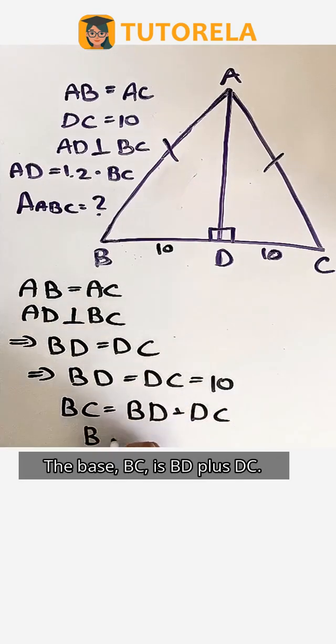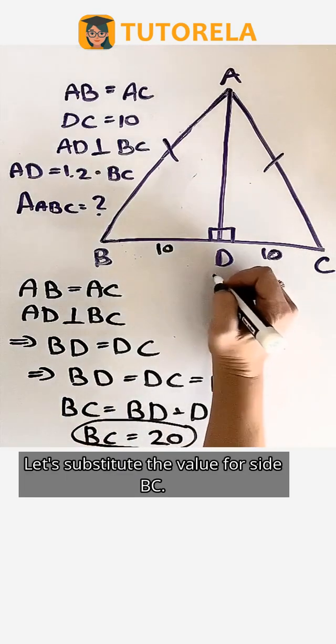The base BC is BD plus DC. Let's substitute the value for side BC.